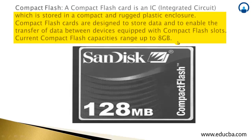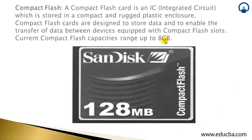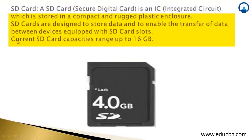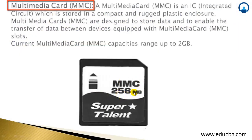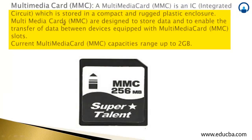Current compact flash capacities range up to 8 GB. You can see a SanDisk compact flash of 128 MB, and compact flash is available up to 8 GB. The SD (Secure Digital) card is another IC designed to store and transfer data between devices equipped with SD card slots — current SD card capacities range up to 16 GB. MMC (Multimedia Card) is also an important IC that stores data in a compact and rugged plastic enclosure, with current MMC capacities ranging up to 2 GB.